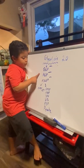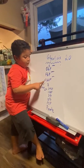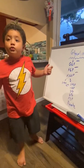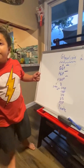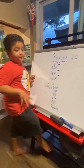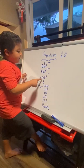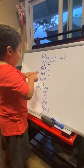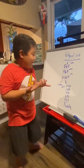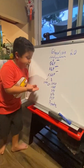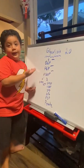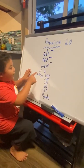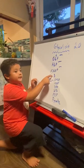Now, fructose-6-phosphate is going to become fructose-1,6-bisphosphate — how? Phosphofructokinase. Now, fructose-1,6-bisphosphate splits up into two molecules: dihydroxyacetone phosphate and glyceraldehyde-3-phosphate — how? Aldolase.